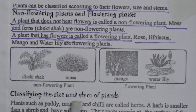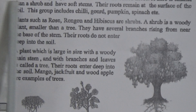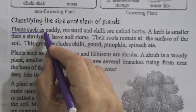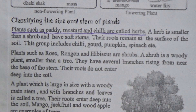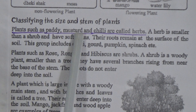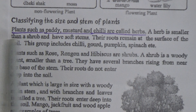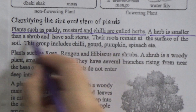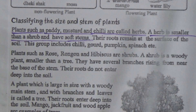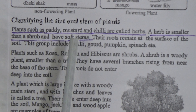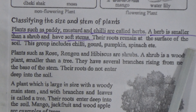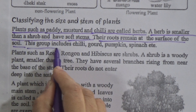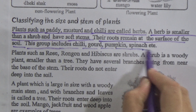Now, classifying plants by size: plants such as pedi, mustard and chili are called herbs. Underline this - it is a broad question-answer. A herb is smaller than a shrub and has soft stems. Their roots remain at the surface of the soil. This group includes chili, pumpkin, spinach, etc.